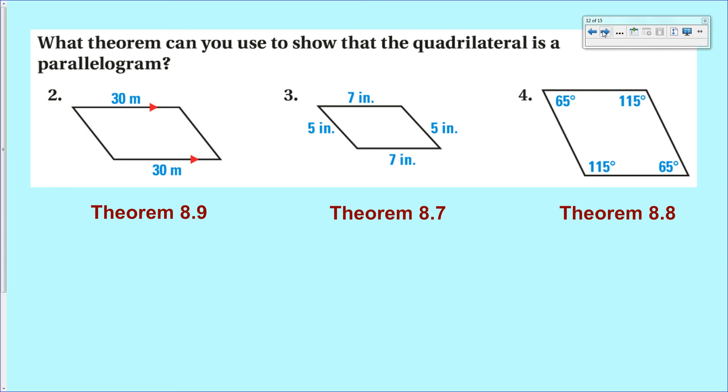If you have 8.7 says that if you have two pairs of opposing sides congruent in length or equal in length, it's a parallelogram.